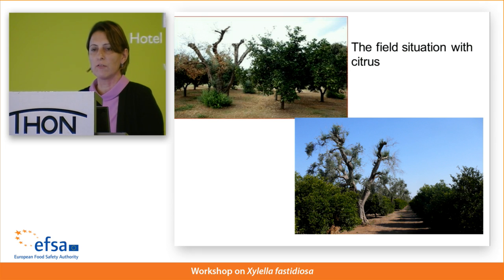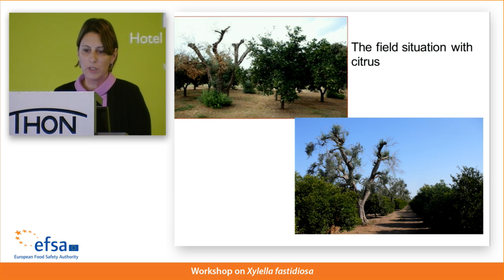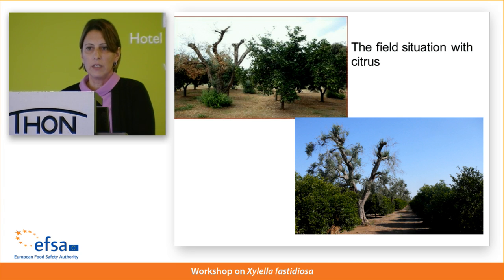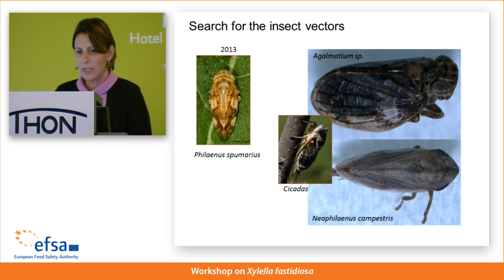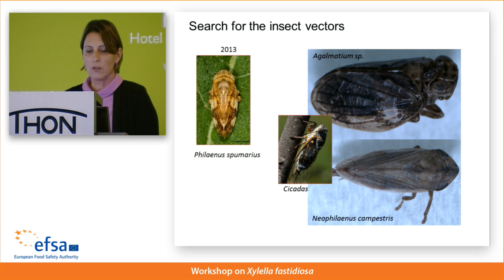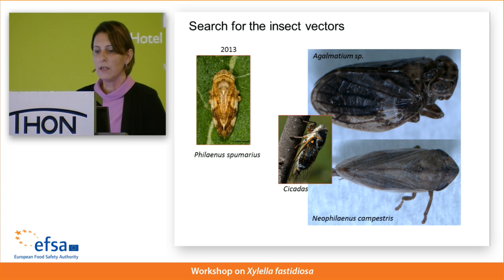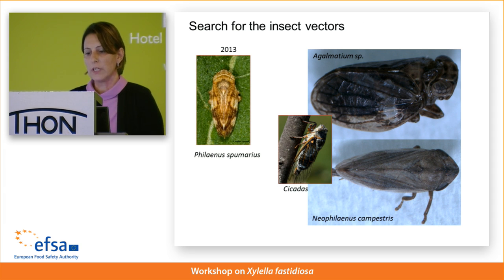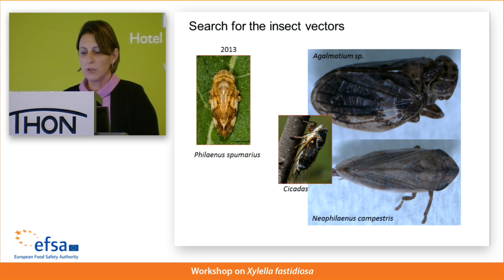Regarding the vector, Philaenus spumarius is so far the predominant insect vector in the area and has been proven a vector of the Codiro strain. Other insects — other xylem feeders — have been screened and tested for their capability to acquire and transmit the bacterium, but so far there are no data supporting that any other insect is capable of being a vector of the Codiro strain.